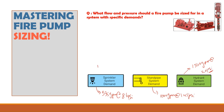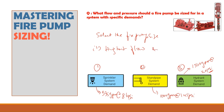Based on these three values, we need to select the fire pump based on the highest flow and highest pressure. It is very simple. We select the fire pump as 1500 gpm at 145 psi.